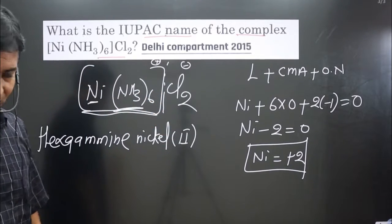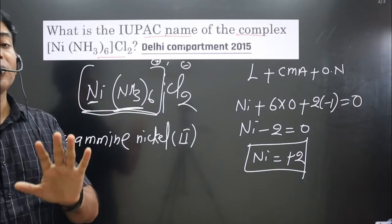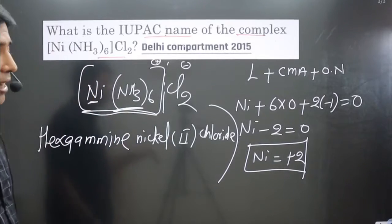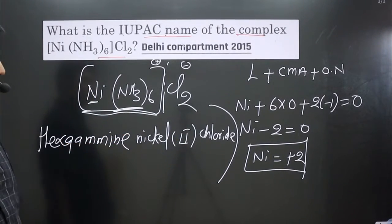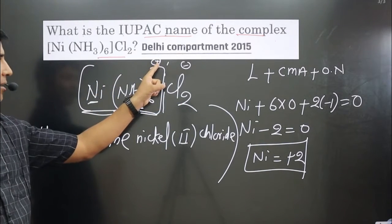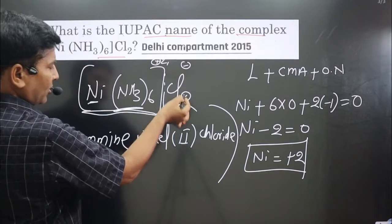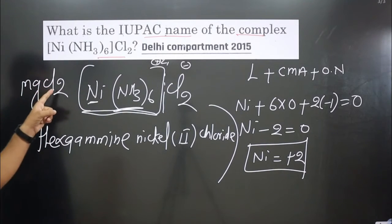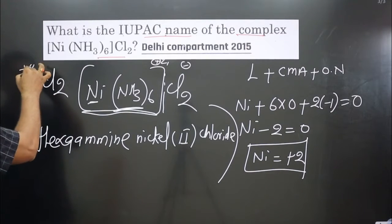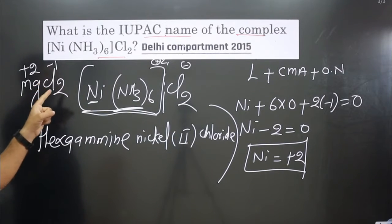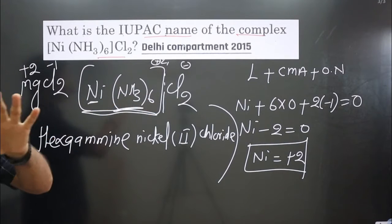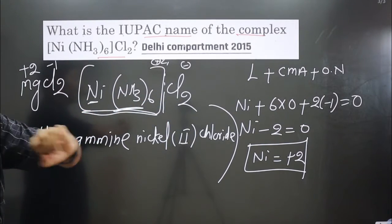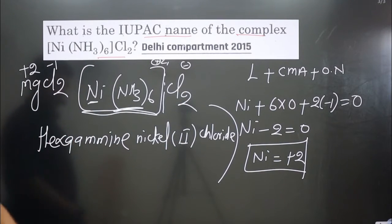For the counter ion, we do not consider the number of counter ions — we write only the name. So we write 'chloride,' not 'dichloride.' Writing 'dichloride' would be incorrect. The subscript 2 comes from balancing the charge: the complex has +2 charge and chloride has −1, so cross-multiplying gives Cl2. For example, in MgCl2, we do not say magnesium dichloride because the 2 comes from charge balancing. For counter ions, ignore the number entirely — no prefix — just write the name, i.e., chloride.